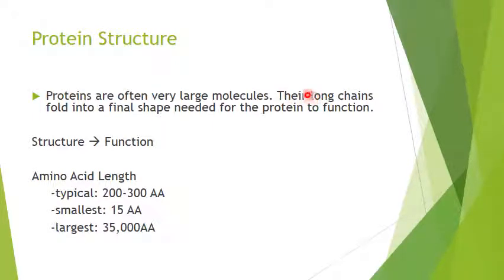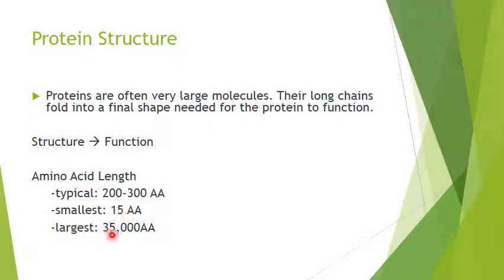Proteins are very large molecules. They're long chains of amino acids that fold into a final shape that determines their function. The typical length of a protein is somewhere between 200 and 300 amino acids. The smallest one we know of is 15 amino acids long, and the largest one is over 35,000 amino acids long.